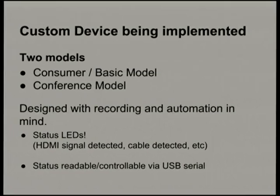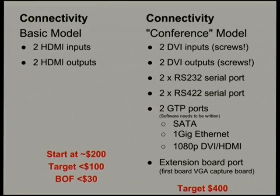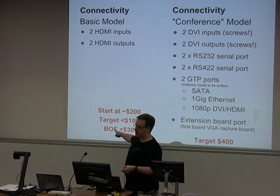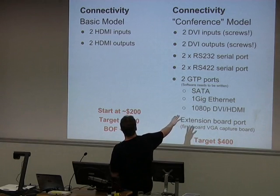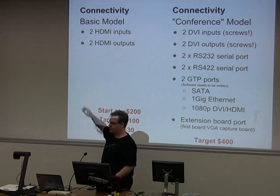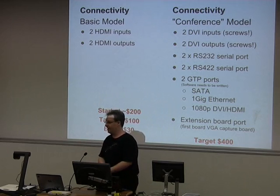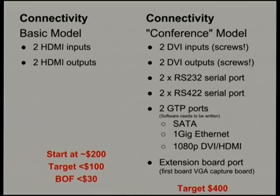We're implementing a custom version that removes everything we don't need. It'll come in a consumer/basic model and a conference model. The consumer model is designed to be as cheap as possible — probably $200 to start, but we want to get under $100. The conference model is more feature-rich: it uses DVI ports so you can screw the cables in so they don't fall out, has RS-232 ports to connect to pan-tilt-zoom cameras, and has an extension port on the side for add-on boards.